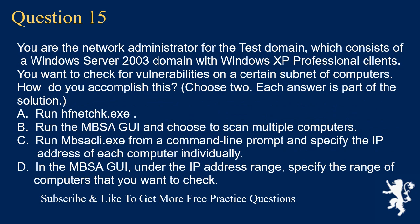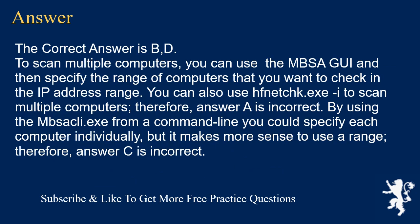Question 15. You are the network administrator for the test domain, which consists of a Windows Server 2003 domain with Windows XP Professional clients. You want to check for vulnerabilities on a certain subnet of computers. How do you accomplish this? Choose 2 — each answer is part of the solution. A. Run FnetCHK.exe. B. Run the MBSA GUI and choose to scan multiple computers. C. Run mbsacli.exe from a command line prompt and specify the IP address of each computer individually. D. In the MBSA GUI, under the IP address range, specify the range of computers that you want to check. The correct answers are B and D. To scan multiple computers, you can use the MBSA GUI and specify the range of computers in the IP address range. You can also use FnetCHK.exe to scan multiple computers. Therefore, answer A is incorrect. By using mbsacli.exe from a command line you could specify each computer individually, but it makes more sense to use a range. Therefore, answer C is incorrect.